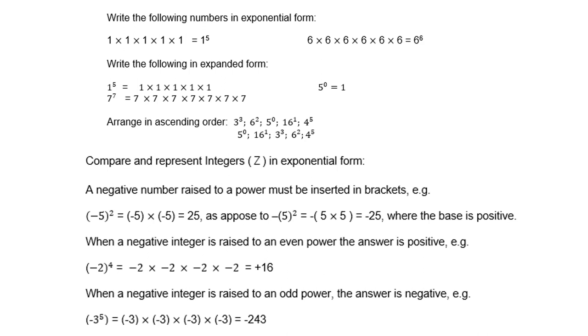Let's write the following numbers in exponential form. 1 times 1 times 1, five times — therefore, 1 to the power of 5. 6 times 6 times 6, six times — therefore, 6 to the power of 6.